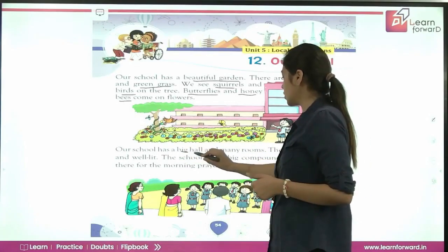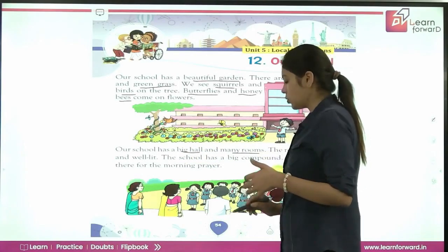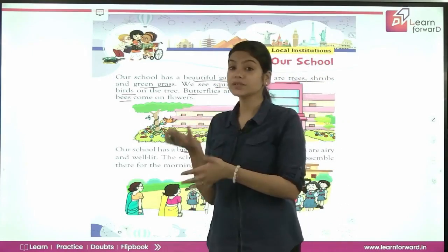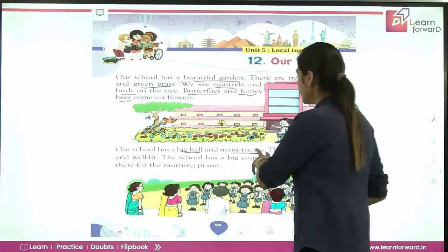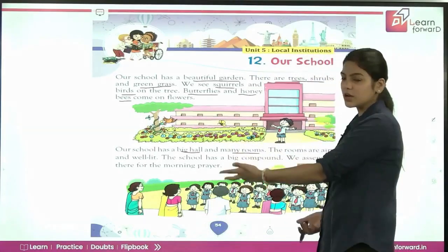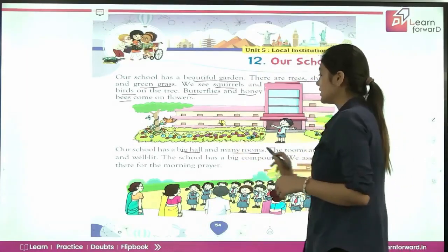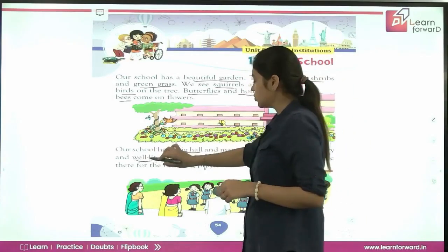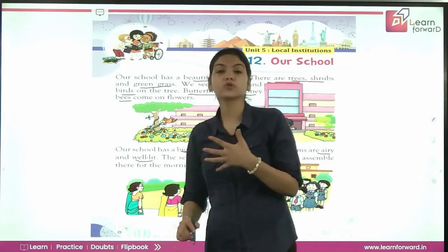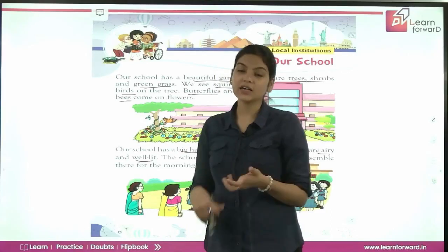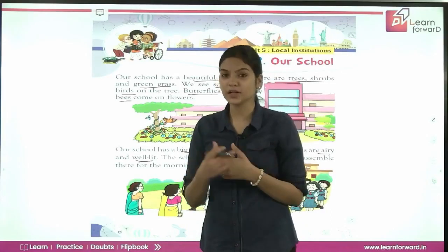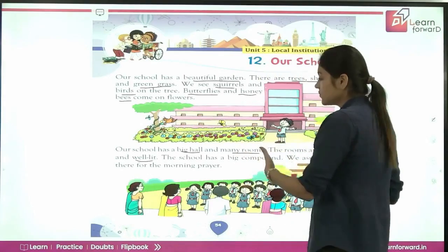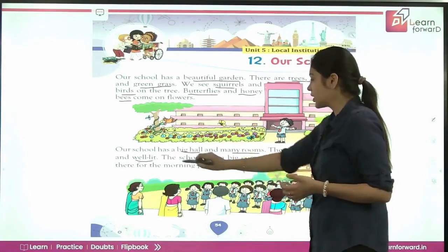Our school has a big hall and many rooms. Every school has a big hall, which is sometimes also known as an auditorium, and a lot of rooms which are our classrooms. The rooms are airy and well lit. Like a house, the school's rooms should also be airy and well lit so that everyone can study comfortably.